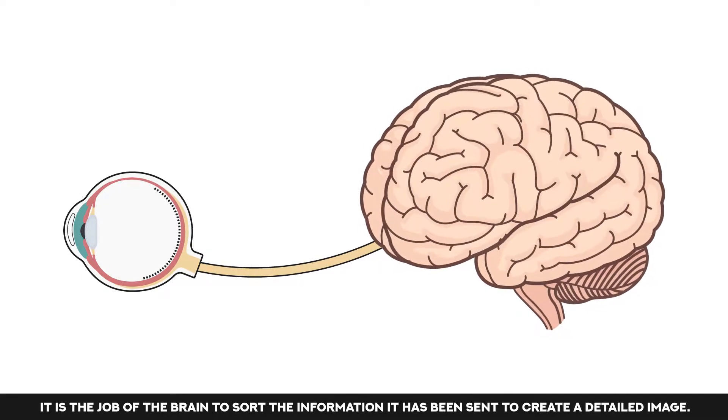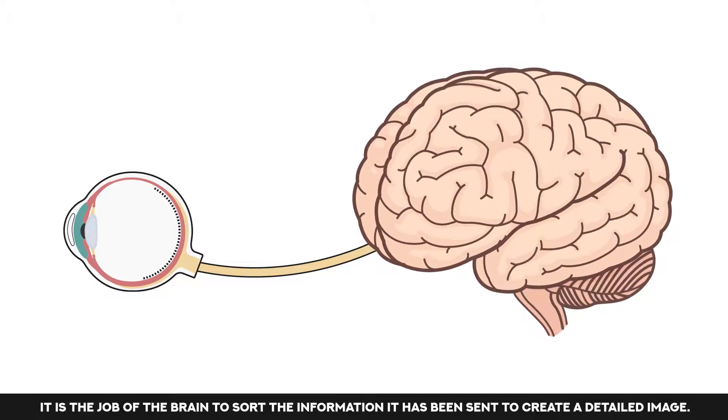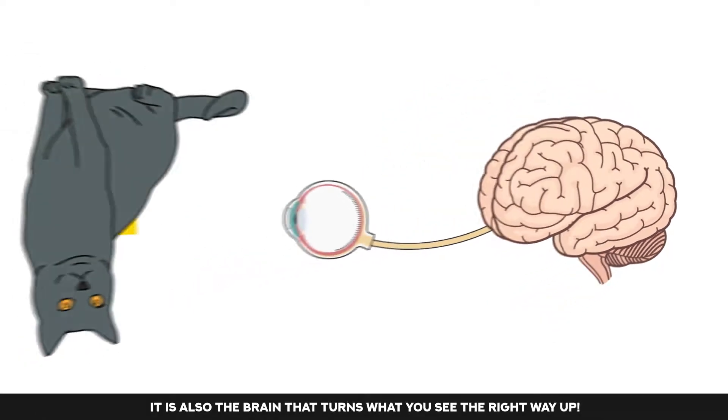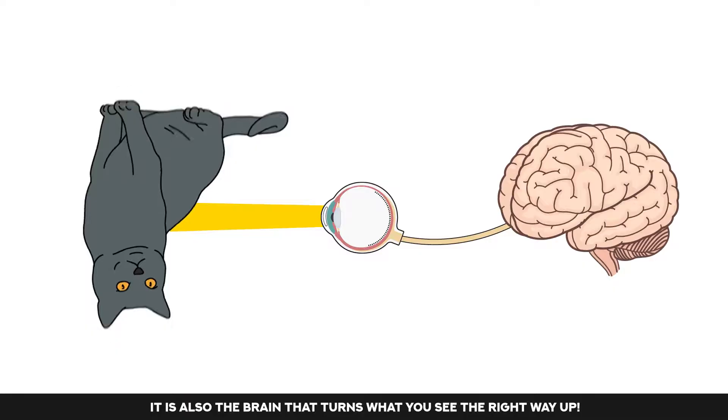It is the job of the brain to sort the information it has been sent to create a detailed image. It is also the brain that turns what you see the right way up.